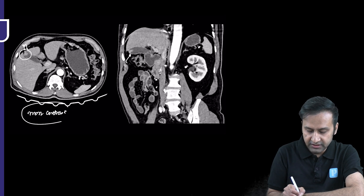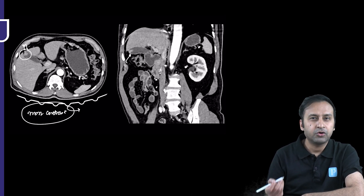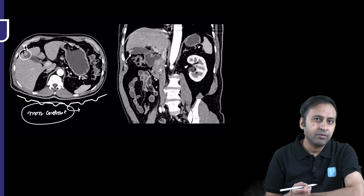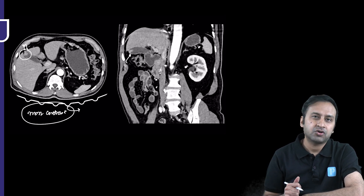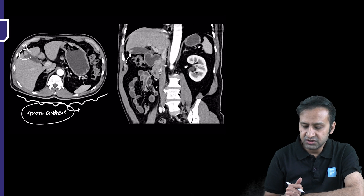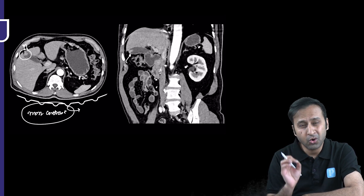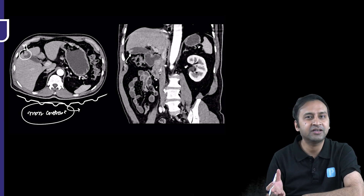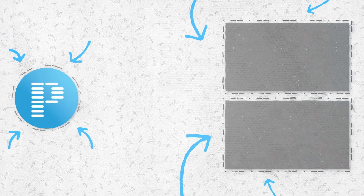This is the importance of a non-contrast scan specifically in gallbladder pathologies — to rule out tumefactive sludge and to determine whether there is a polyp inside the gallbladder. A polyp will enhance; a stone will not. Alternatively, you can get an ultrasound to help make the diagnosis. If ultrasound is not available, always take a non-contrast scan to determine whether you are dealing with an enhancing lesion, sludge, or a calculus.